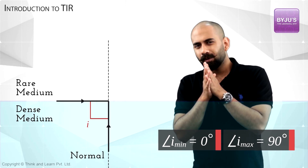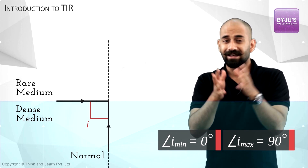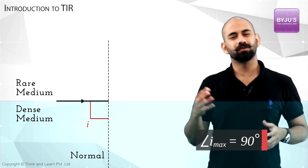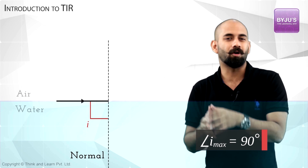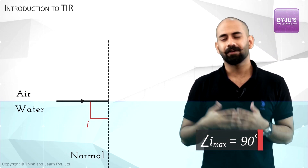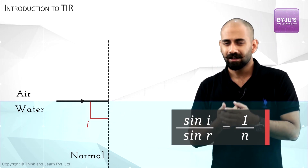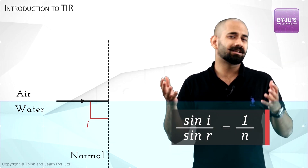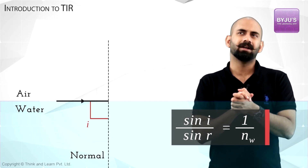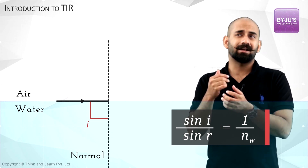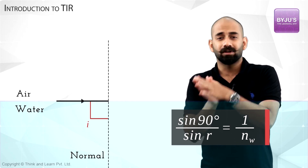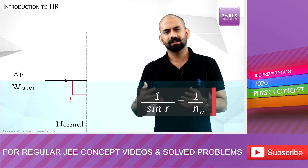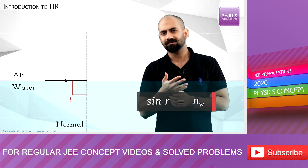Now think about the case where the angle of incidence is actually equal to 90 degrees. For simplicity, assume light is moving from water to air. Applying Snell's law: sin(i) / sin(r) = 1/n, where n is the absolute refractive index of water. If I substitute i = 90 degrees, I get 1 / sin(r) = 1/n, which means sin(r) = n.